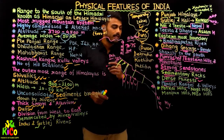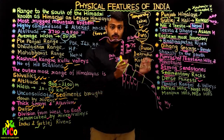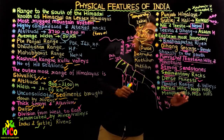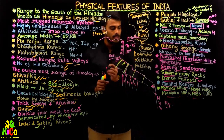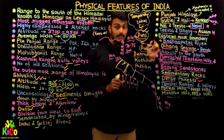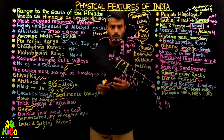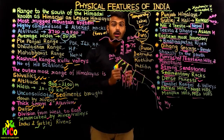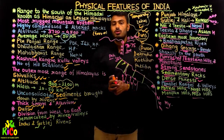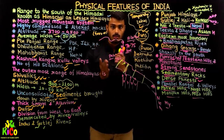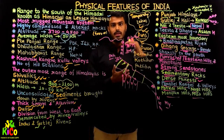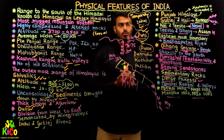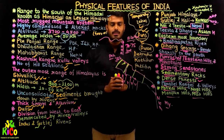So this was all about the Himalayan mountain ranges. We talked about different parts of the Himalayan mountain ranges, both vertically and horizontally, and saw some special features of each. That is it for this lecture. Thank you.